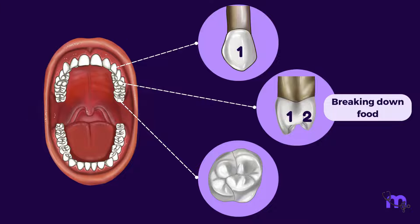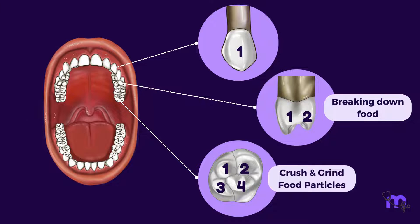Molars, the heavy-duty grinders at the back of our mouths, exhibit even more complexity, with four to five cusps that collaborate in intricate ways to crush and grind food particles.